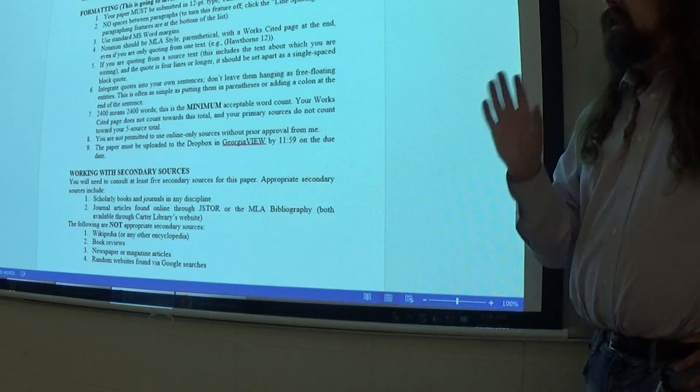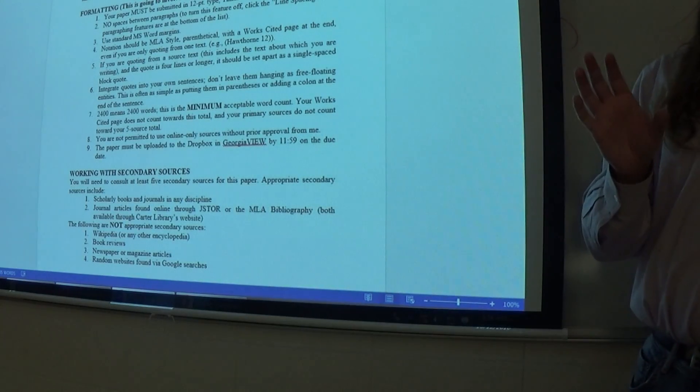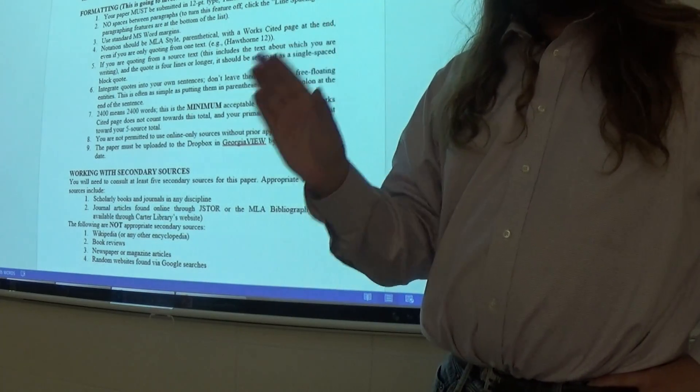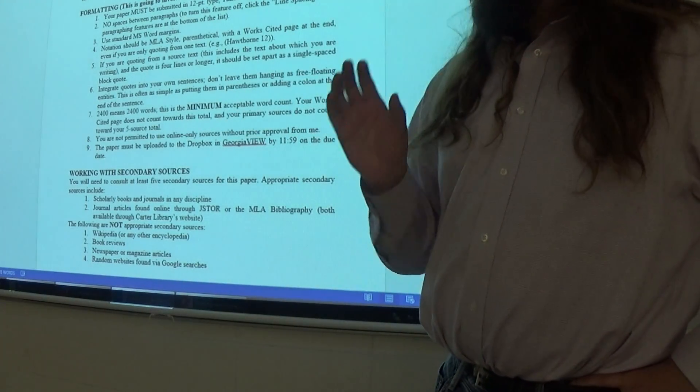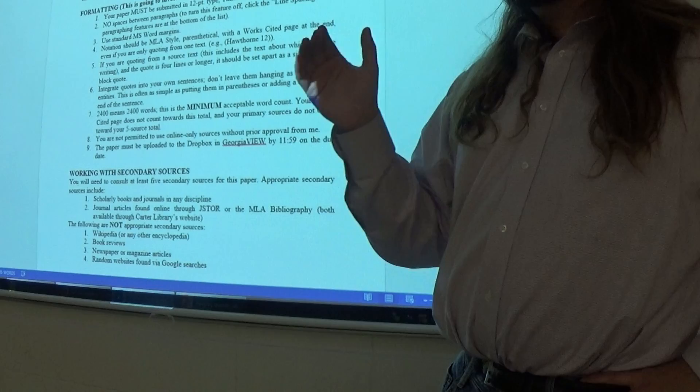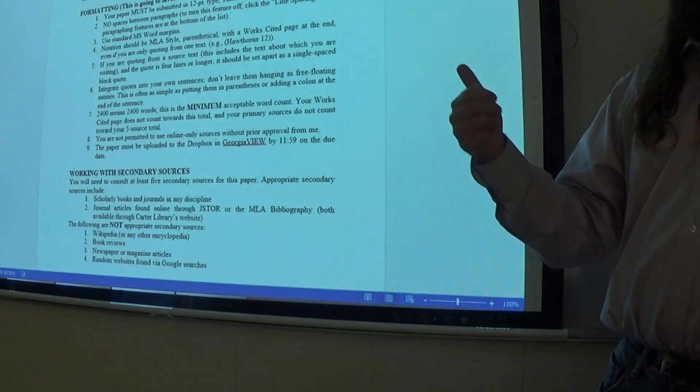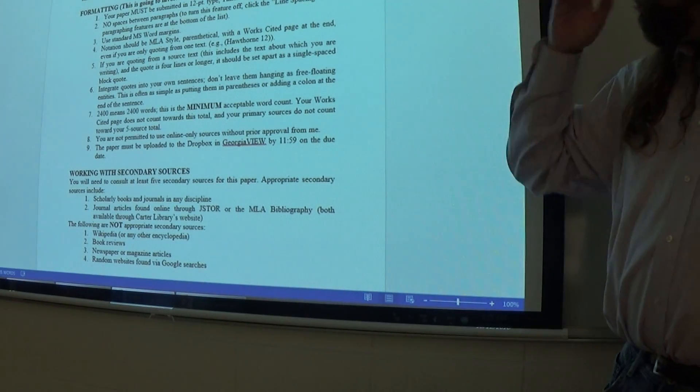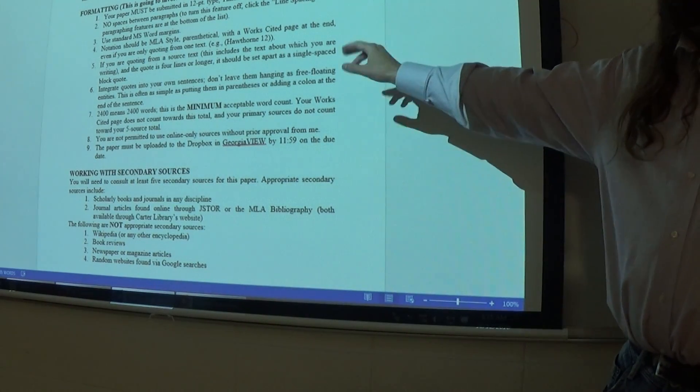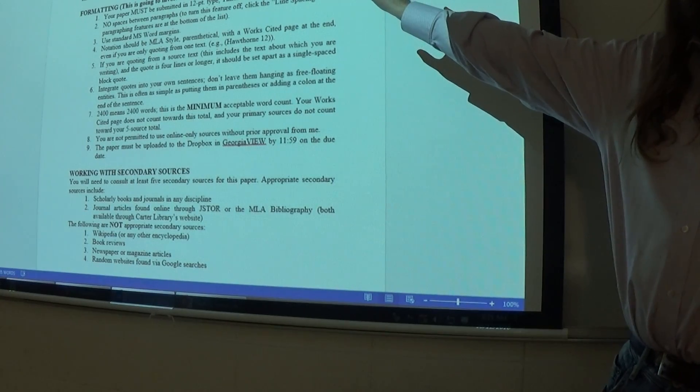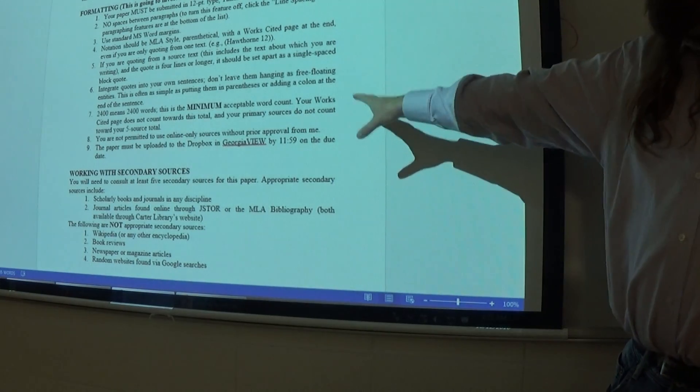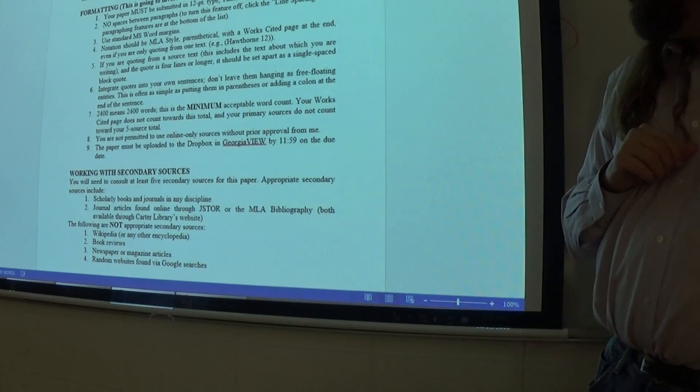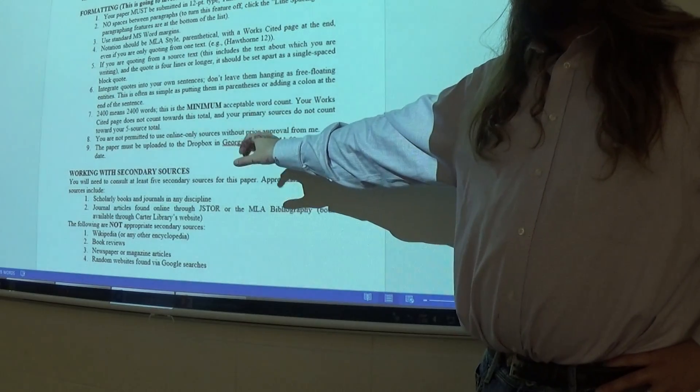This is going to be due on Monday, December 5th. You do get extra credit for going to the writing center, as with the first paper. And I am, again, willing to look at drafts up to 48 hours before the due date. Your works cited page also, once again, does not count towards the total word count. 2400 words means 2400 words, this is the minimum acceptable, and it has to be uploaded by midnight on the due date.